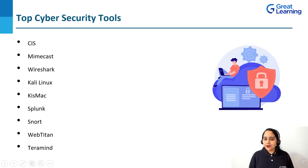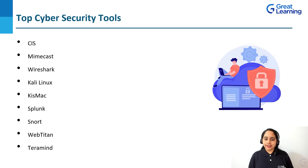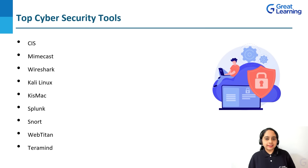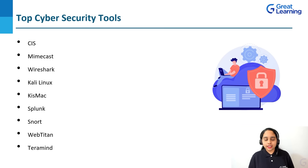Snort is an open-source platform that prevents network intrusion and works on streaming data to the screen through network packets. Snort provides real-time packet analysis and logging, which is an ideal defense after the firewall. It supports various platforms such as Windows, Fedora, FreeBSD, and CentOS. Web Titan is a cybersecurity tool used for web content filtering and blocking ransomware, malware, and other cyber attacks.